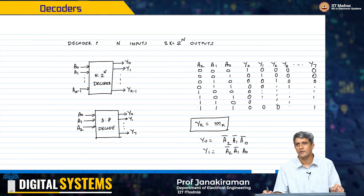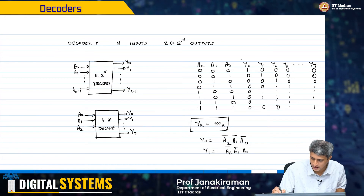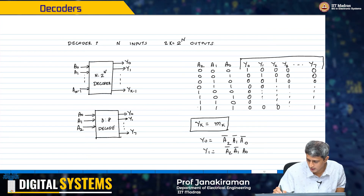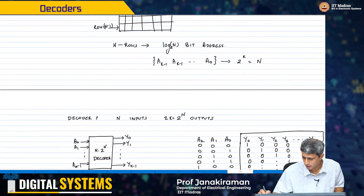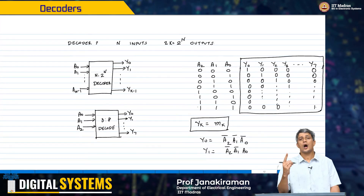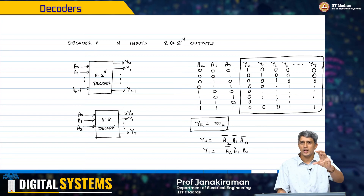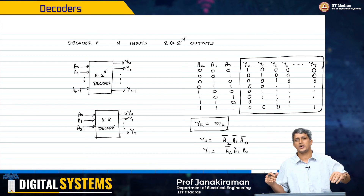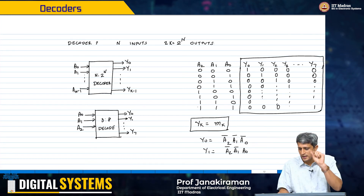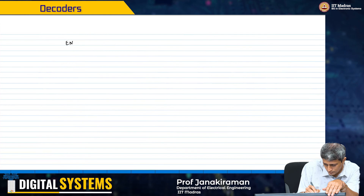However, this decoder has a certain disadvantage. If you look at outputs y_0 to y_7, you will see that at least one output is always high for any combination of inputs. That means the decoder is always active irrespective of the inputs, and that may not be desirable because we might want an inactive state where no output is high. Therefore, the decoder will take an additional input called enable.